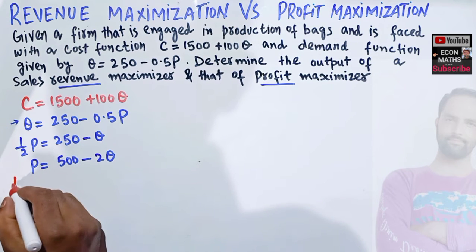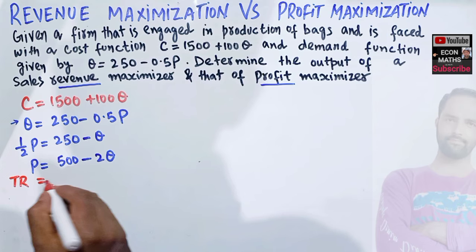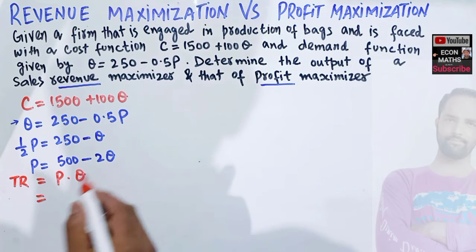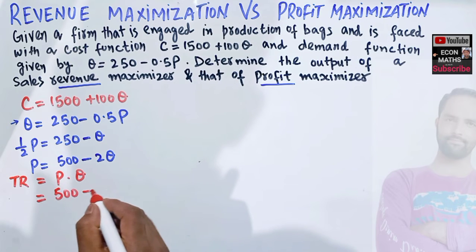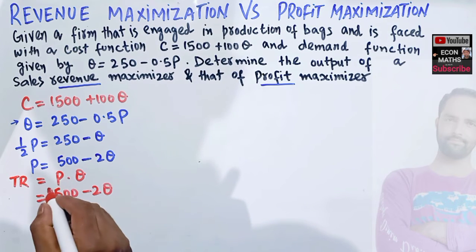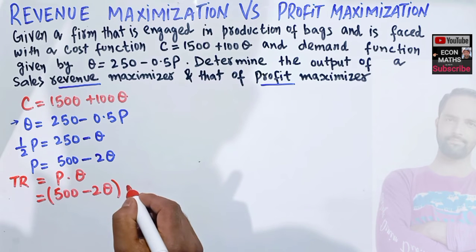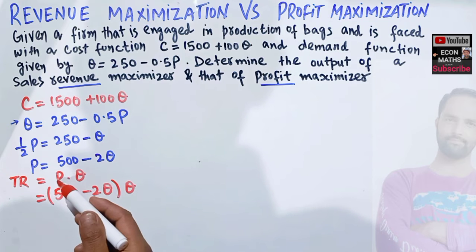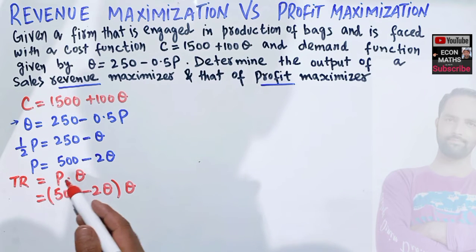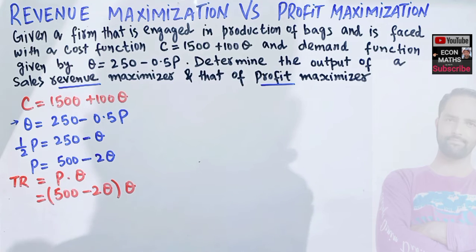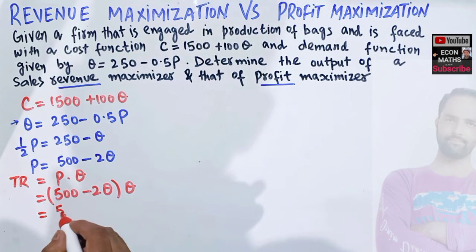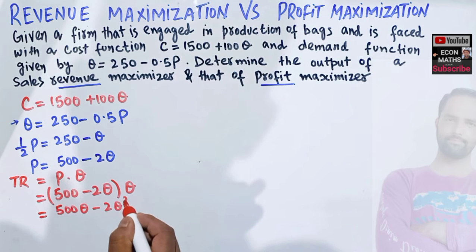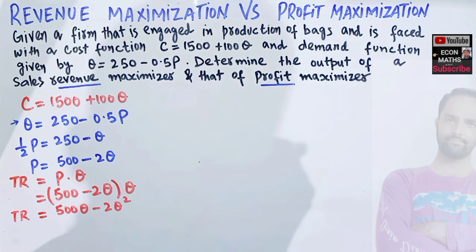Next we find total revenue, which is price multiplied by output. Using our inverse demand function p = 500 − 2q, we multiply by q to get: TR = 500q − 2q². This is our total revenue function.